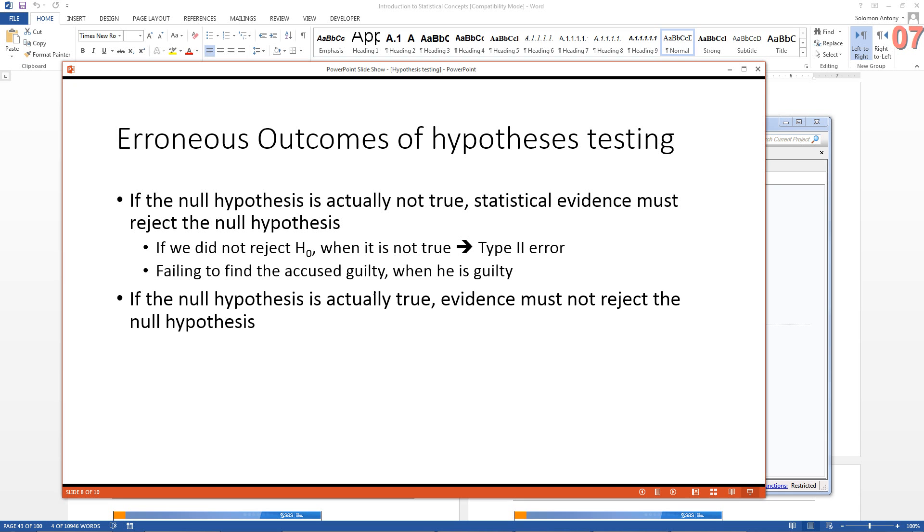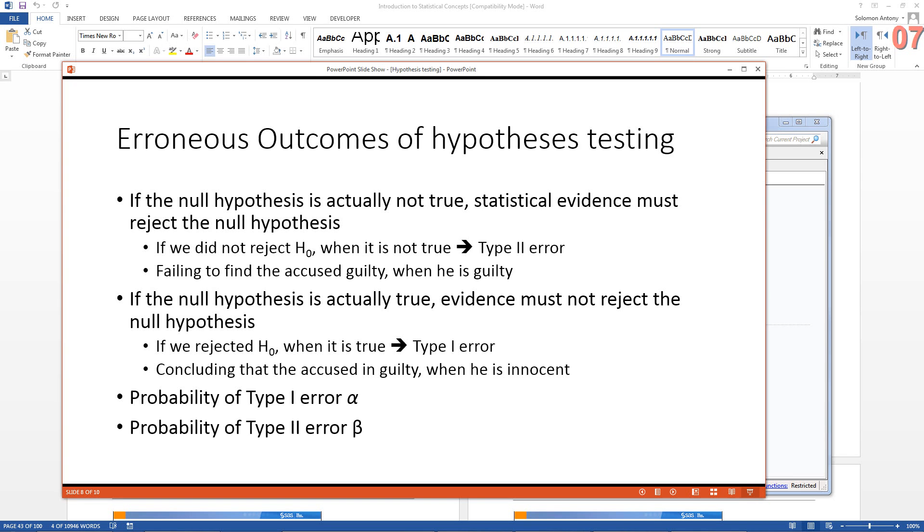Now, the other type of error is if the null hypothesis is actually true and the evidence must not reject the null hypothesis. On the other hand, if we did reject it, then that's called type 1 error. Now, type 1 error is the same as wrongly concluding that the accused is guilty when he is not actually guilty, when he is actually innocent. So there are two type 1 and type 2 errors and when you do research, we try to control for these two types of errors. The probability of type 1 error is called alpha and the probability of type 2 error is called beta.